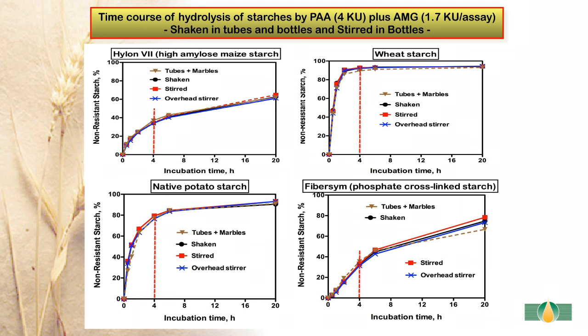The incubations are performed in tubes with shaking or in bottles which are either stirred or shaken. In the top left, we see results for Hylon 7, a high amylose maize starch. What is obvious is that the rate of hydrolysis using any of the incubation conditions is very similar. The simplest incubation is either shaking or stirring the sample in a bottle, which we have chosen to use routinely. Wheat starch, a non-resistant starch, is completely hydrolyzed in 4 hours. Native potato starch is quite hydrolyzed but not completely. FibreSym, a phosphate cross-linked starch, and Hylon 7 are only partially hydrolyzed during this incubation time.